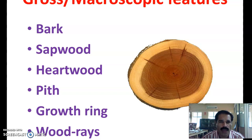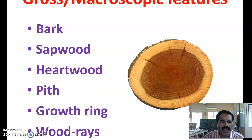The first one is the gross macroscopic feature of wood. These are the features of wood easily identified with the help of taking a cross section of the wood. These macroscopic features of wood include bark, sapwood, heartwood, pith, growth rings, and wood rays. These are the features we can easily see by eye or easily identify.